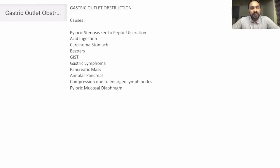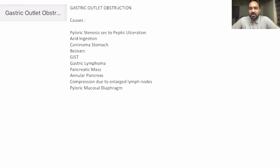Hi friends, in this video we shall be discussing a very important topic of gastric outlet obstruction, where we'll be focusing mainly on the metabolic changes that occur. But before moving towards that, let's take a look at a few of the causes. The causes of gastric outlet obstruction could be pyloric stenosis secondary to peptic ulceration, acid ingestion, carcinoma stomach, and bezoars.